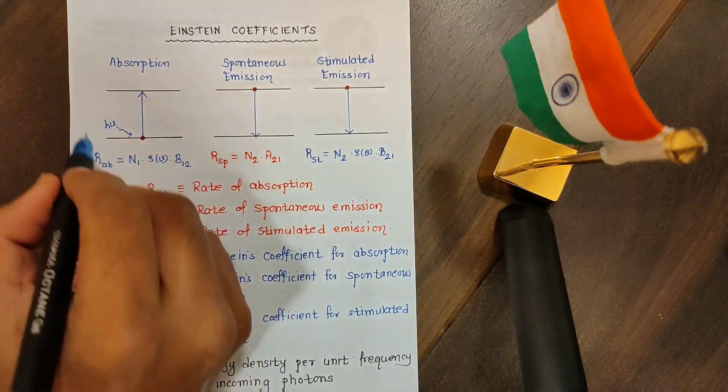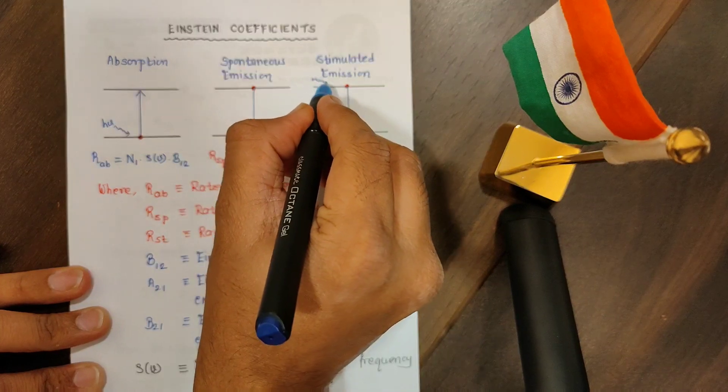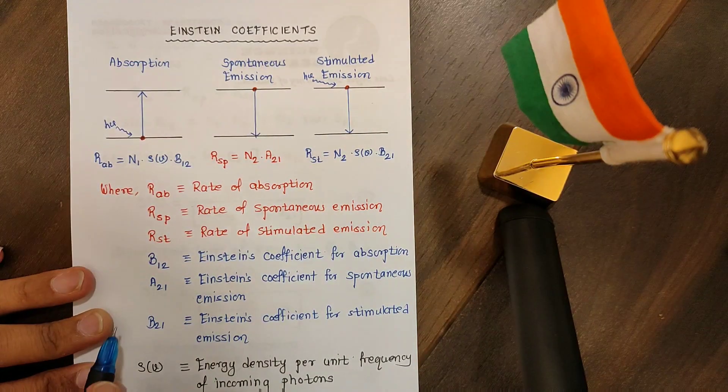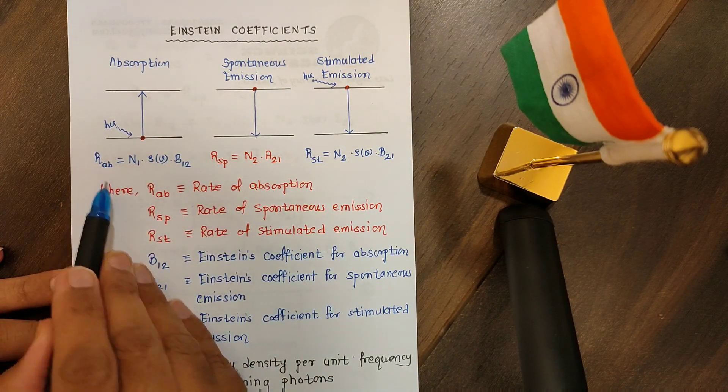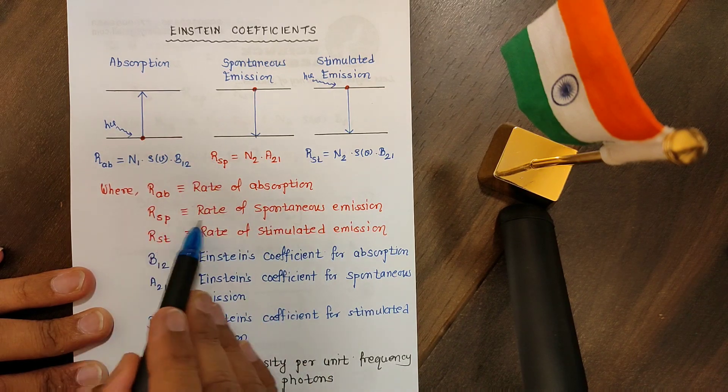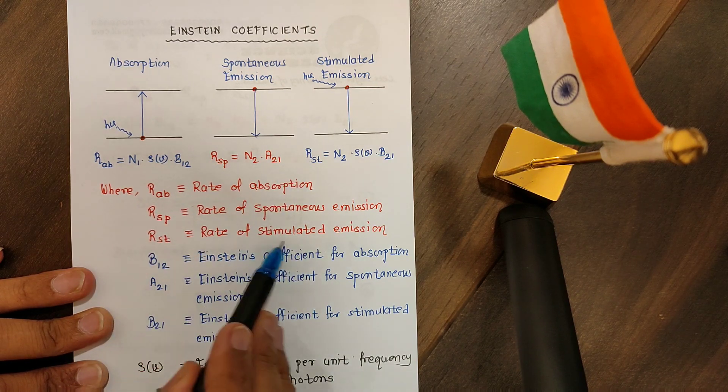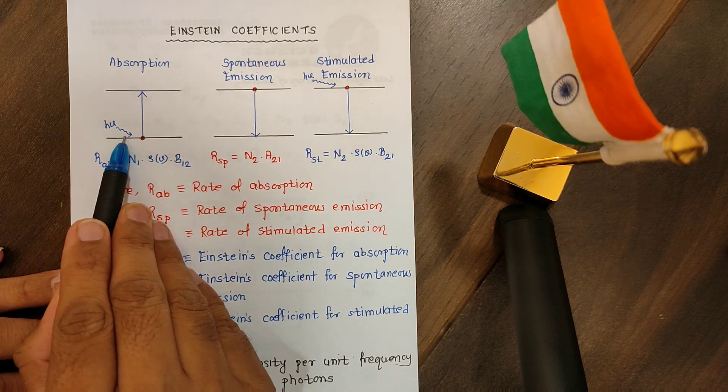So we require external photon in the first and the third process. Let us write the equations for the rate. RAB stands for rate of absorption, RSP stands for the rate of spontaneous emission, RST stands for the rate of stimulated emission.